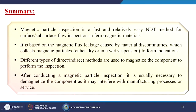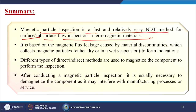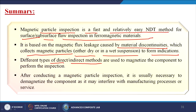In summary, in this lecture we have discussed that magnetic particle inspection (MPI) is a fast and relatively easy non-destructive testing method for surface and subsurface flaw inspection in ferromagnetic materials. It is based on magnetic flux leakage caused by material discontinuities, which collects magnetic particles — either dry or in a wet suspension — to form indications. Different types of direct or indirect methods are used to magnetize the component and perform the inspection. After conducting a magnetic particle inspection it is usually necessary to demagnetize the component so that it can be used for next operations. Thank you.